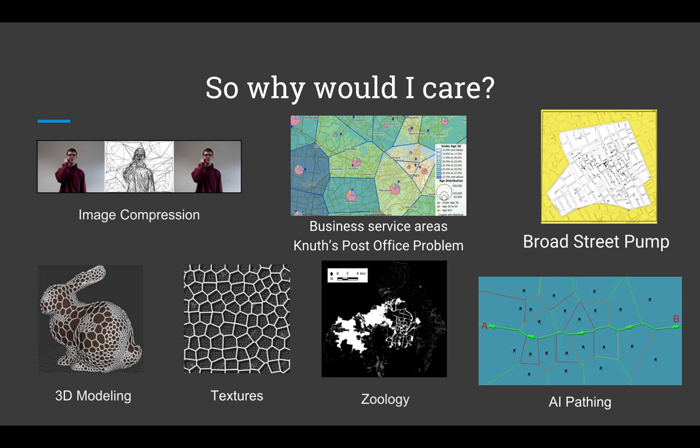They're a good way to determine the best place for a new business location. Voronoi diagrams are the answer to Knuth's post office problem. If you have a series of post office locations, how do you best determine the most effective service areas for each location? Voronoi diagrams are the answer.